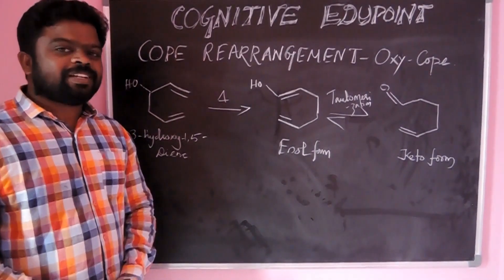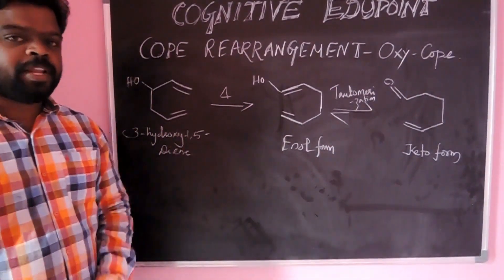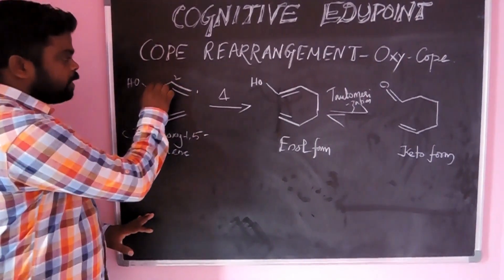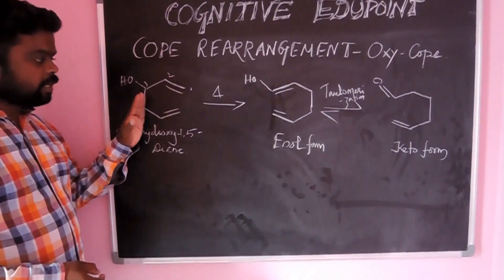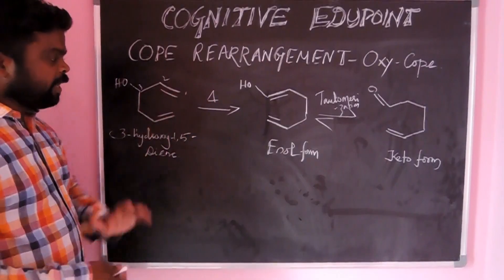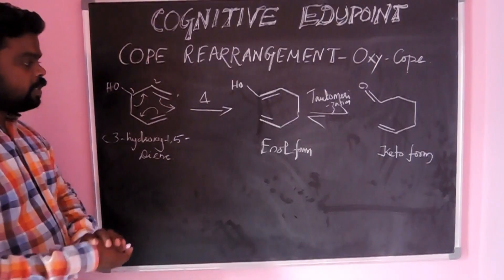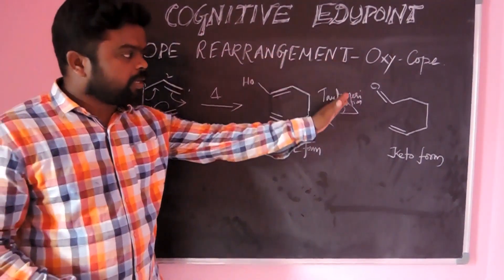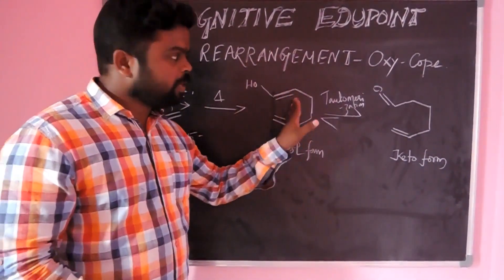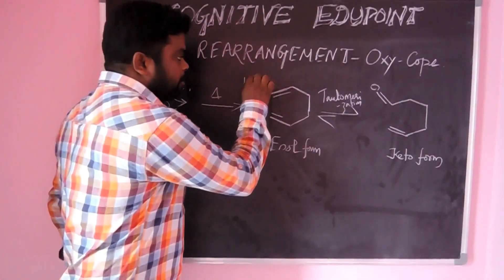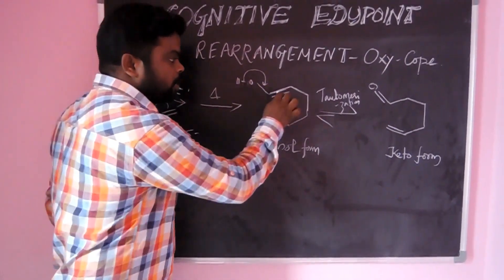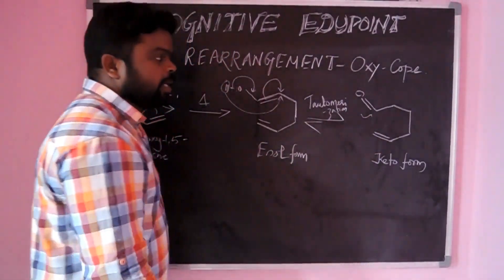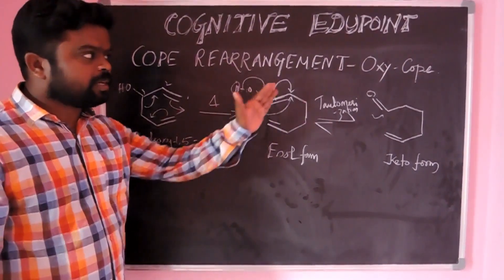Now we are going to discuss a special type of Cope rearrangement. If the diene compound has a hydroxyl substituent at the third position — counting 1, 2, 3 in the diene — this undergoes oxy-Cope rearrangement. Upon heating, an enal form is produced. This enal form is highly unstable because compared to the enal form, the keto form is highly stable. So the bond between oxygen and hydrogen moves, the carbon carries a negative charge, and then the hydrogen moves to the carbon. This gives the compound in keto form via tautomerization. This special type of Cope rearrangement is called oxy-Cope rearrangement.